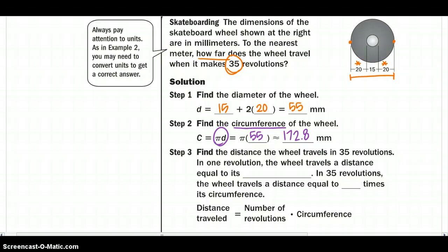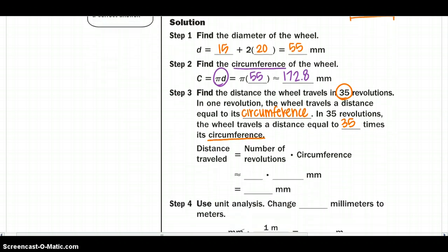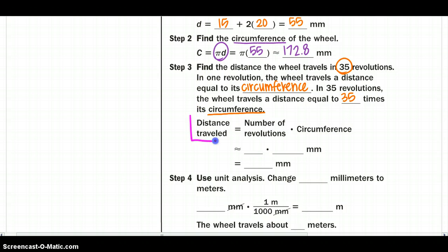Our next step, we need to find the distance the wheel travels in 35 revolutions. In one revolution, the wheel travels a distance equal to its circumference because it's the distance around the circle. In 35 revolutions, the wheel travels a distance equal to 35 times the circumference. So they have actually given you a very useful equation right here that you might want to refer back to if you have any problems, kind of like this.